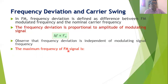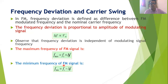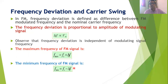In FM we can compute the maximum frequency as f_max equals fc plus delta-f, where fc is the central carrier frequency. Adding the frequency deviation to the central carrier frequency gives the maximum frequency of the FM signal. The minimum frequency is f_min equals fc minus delta-f — subtracting the frequency deviation from the central carrier frequency gives the minimum frequency of the FM signal.